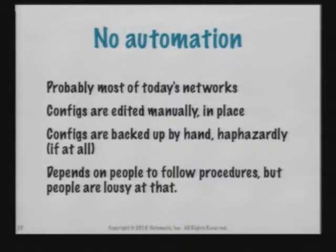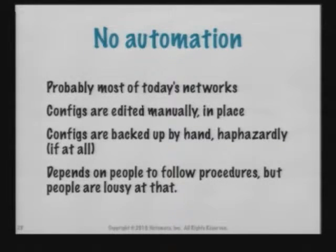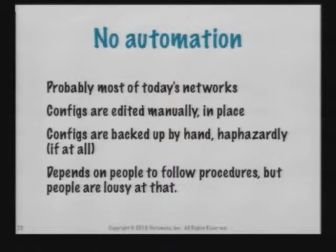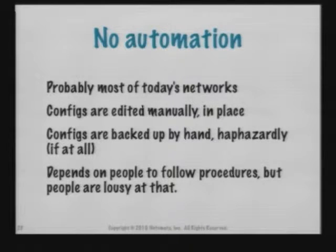Let's talk about the various levels of automation you might go through on the path to automated nirvana. You'll probably start with no automation — this is typical of most enterprise networks today. Configs are edited manually, in place, live, on the production boxes. How many of us have typed the command and sat there waiting, 'Do we dare hit return?' Configs are backed up by hand, haphazardly, if at all. This basically depends on people to follow procedures reliably and consistently — and people are just bad at that. That's what computers excel at, so let's use computers to do it.